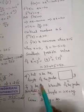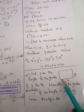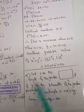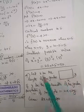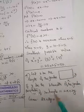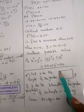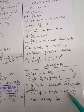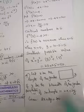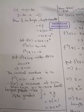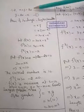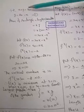Let x be the length of the garden and y be the breadth of the garden. The perimeter of the rectangle is x plus y plus x plus y. What is given: 2x plus 2y equals 40, which gives x plus y equal to 20. Therefore, y is equal to 20 minus x.